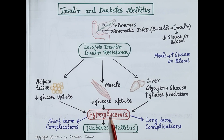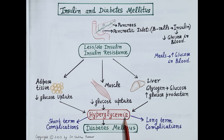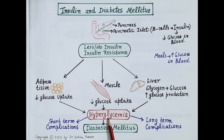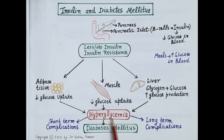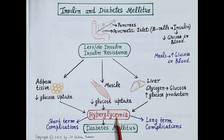This increased level of glucose in the blood is termed as hyperglycemia. Hyper means excessive, gly refers to glucose, and emia refers to blood. So glucose levels increase in the blood, and that is termed as hyperglycemia.